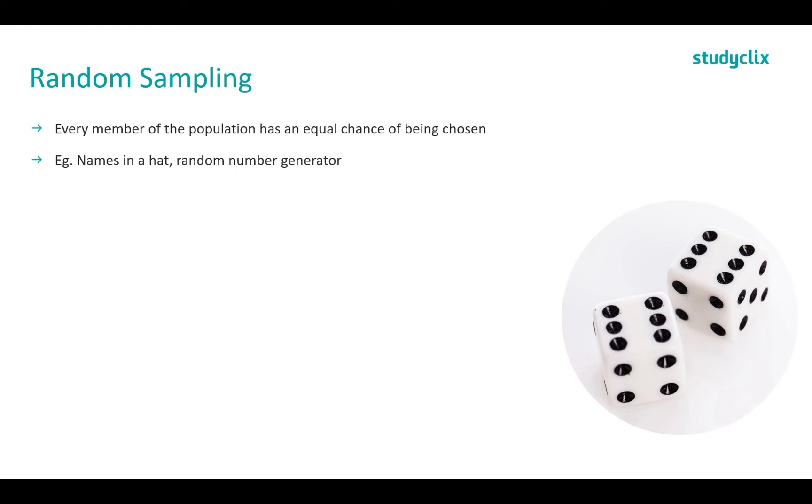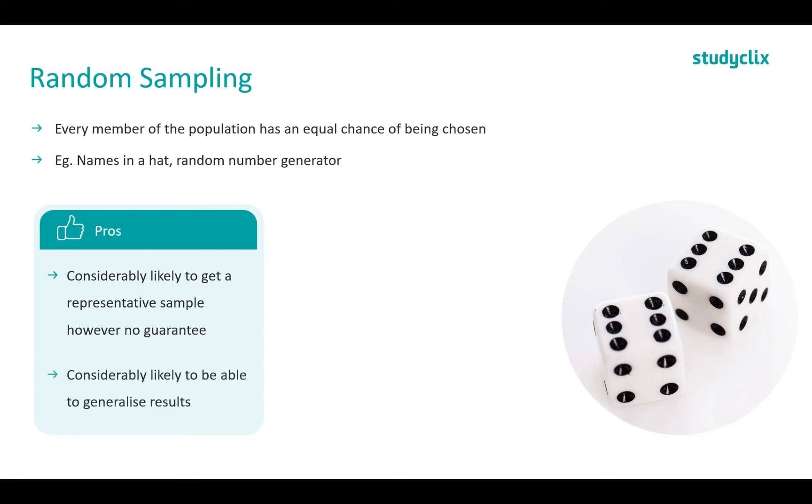Now let's go through some pros and cons. This method is good because it is likely to get a representative sample, however there is no guarantee. It may not be representative but there is a good chance. And if we do end up with a representative sample we are able to generalize the results.